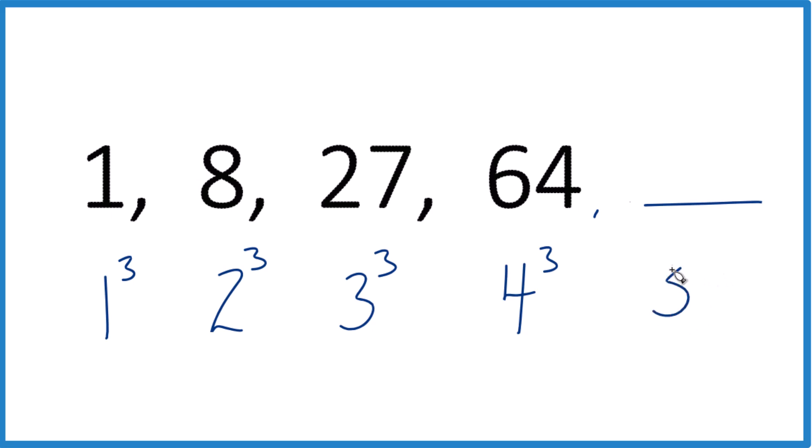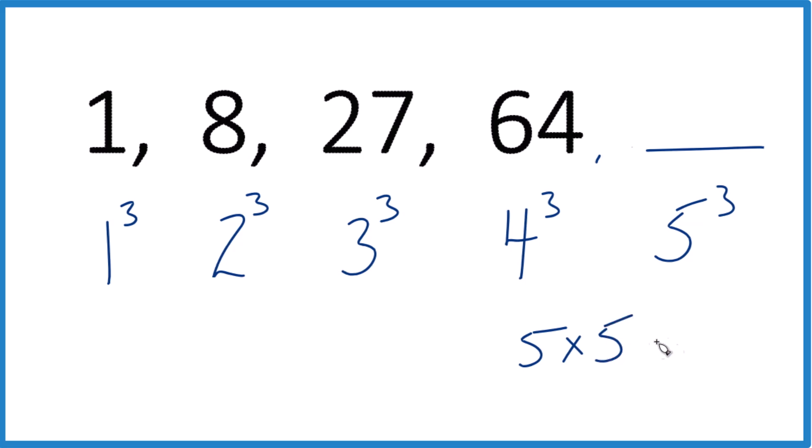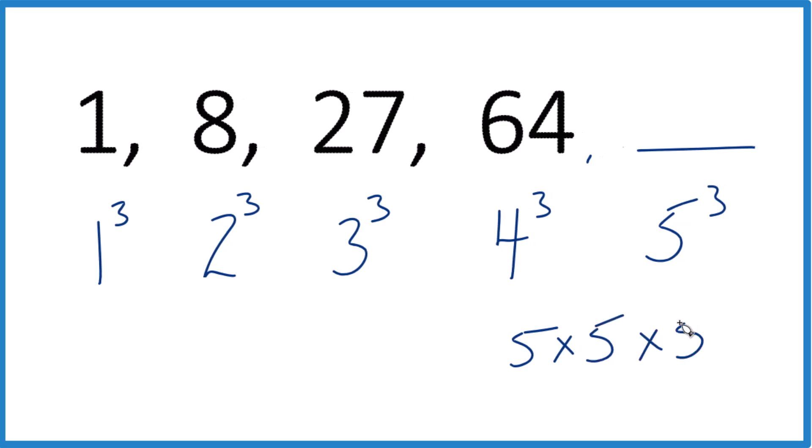That means over here 5 cubed, 5 times 5, that's 25 times 5, that would equal 125. So the next number here should be 125 according to this sequence, and this really looks like it makes sense.